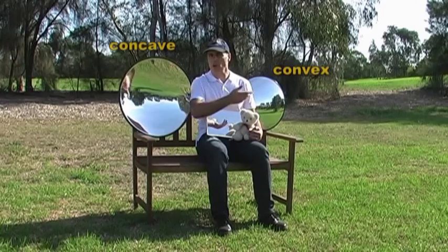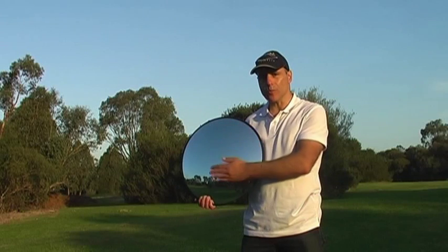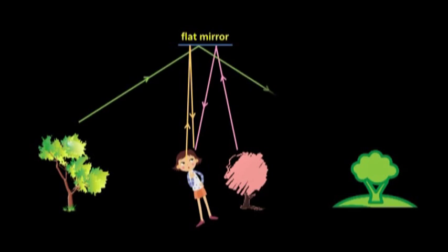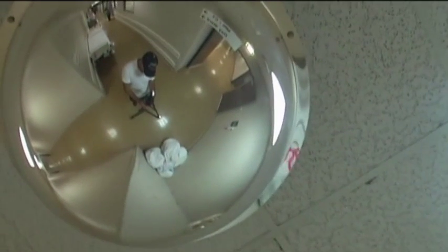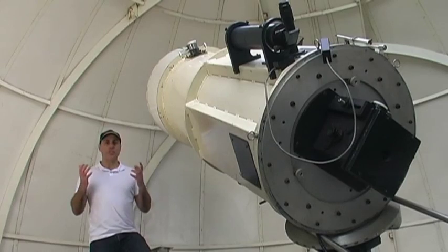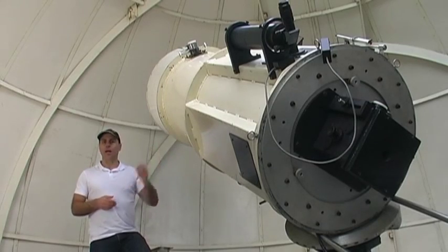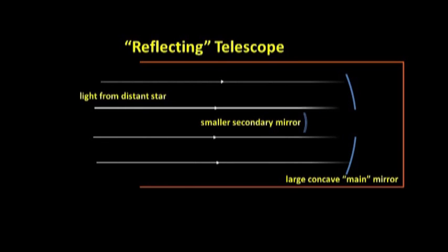Shedding Light on Curved Mirrors is the brilliant third program in the Shedding Light series of educational science videos. Using clear real-life examples and superb animations, we explain how convex and concave mirrors produce images and why they're so useful.